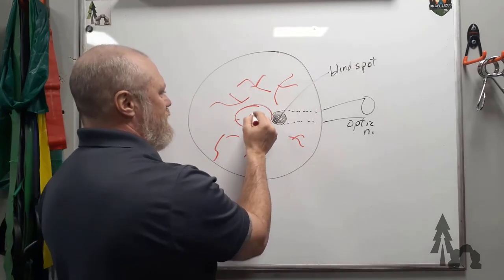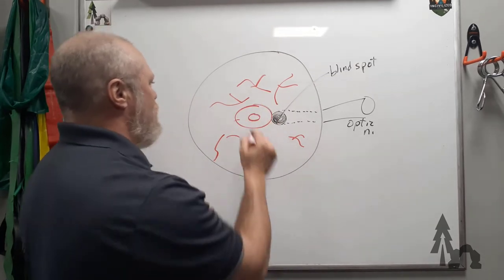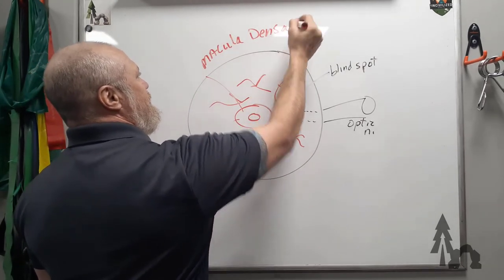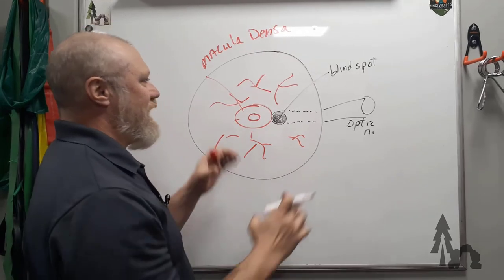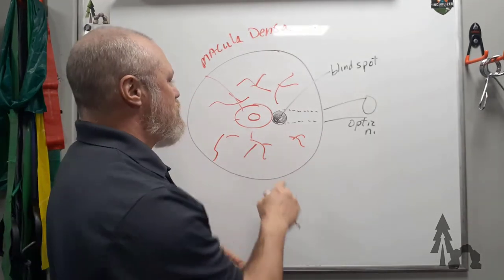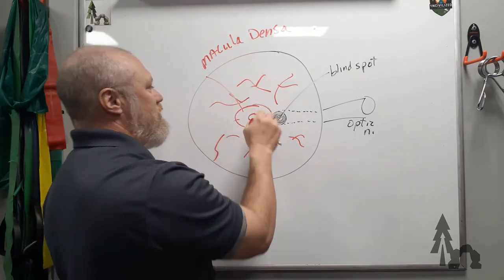The macula densa is an area of highest concentration of your rods and cones, mostly cones, highest concentration there. And then there's this area right in the center of the macula densa, which is called the fovea centralis.